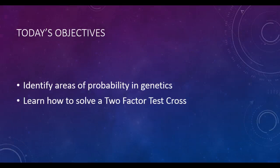Today's objectives are to identify areas of probability and genetics. We did this in the last tutorial with Punnett squares or a one-factor test cross. This time we're going to learn how to solve a two-factor test cross and look at those areas of probability within a two-factor test cross.